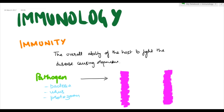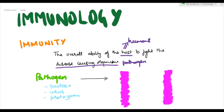Hello friends, welcome to Simplified Biology. Today I will be teaching a very important topic, that is immunology. Let's start with the definition of immunity. Immunity is the overall ability of the host — that is humans in this case — to fight the disease-causing organism, which is also known as a pathogen.